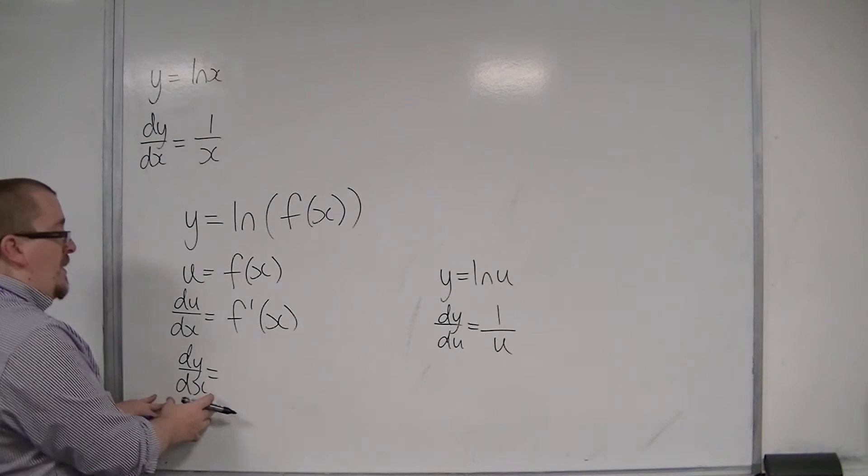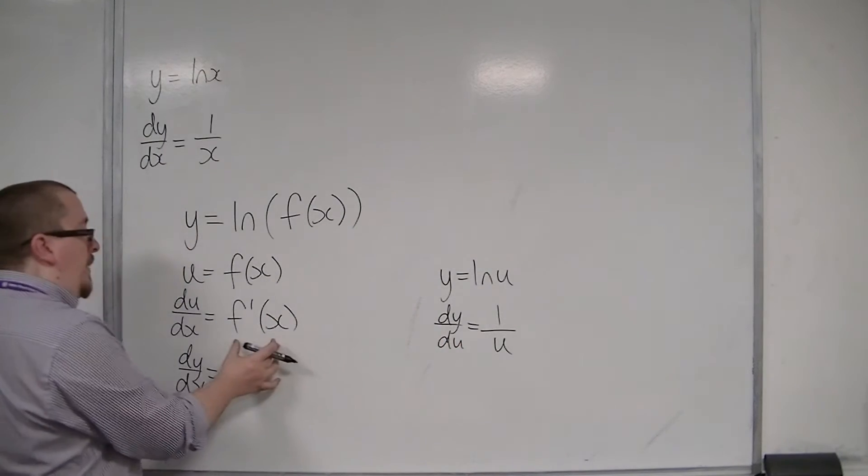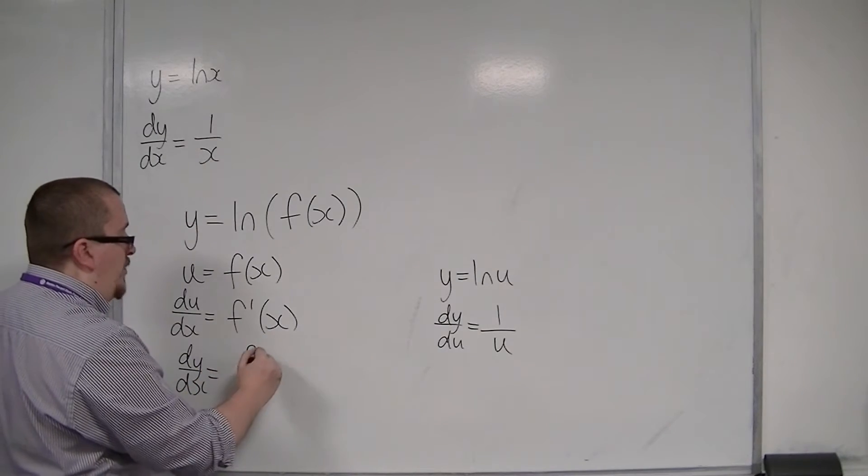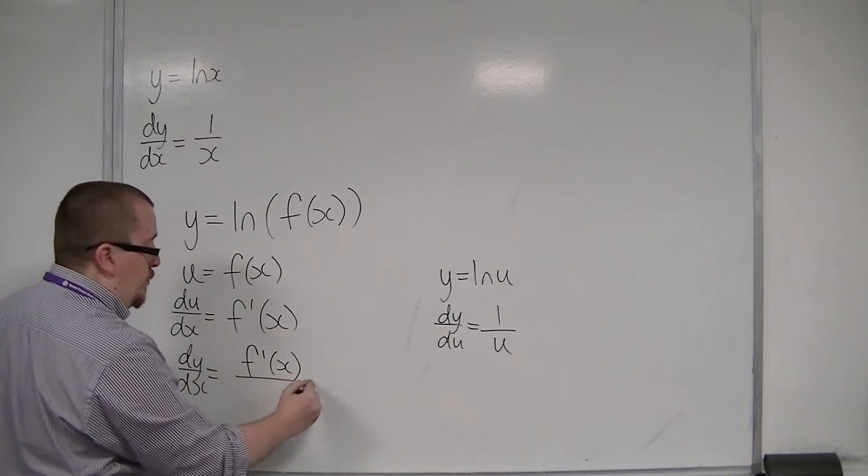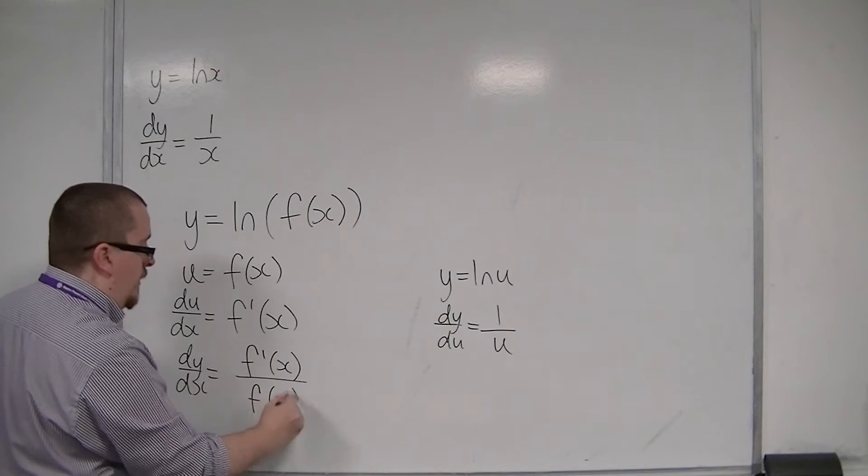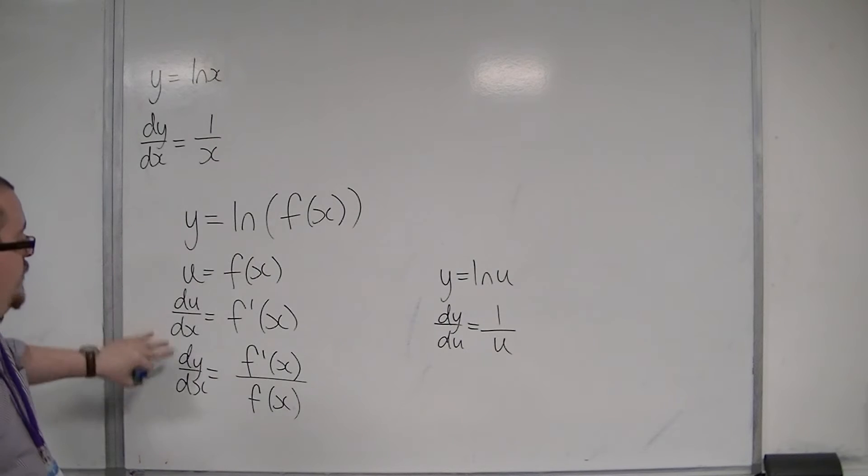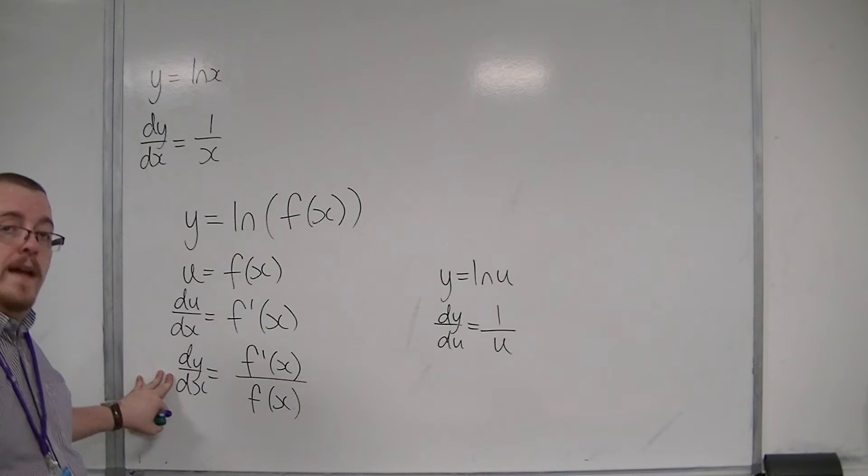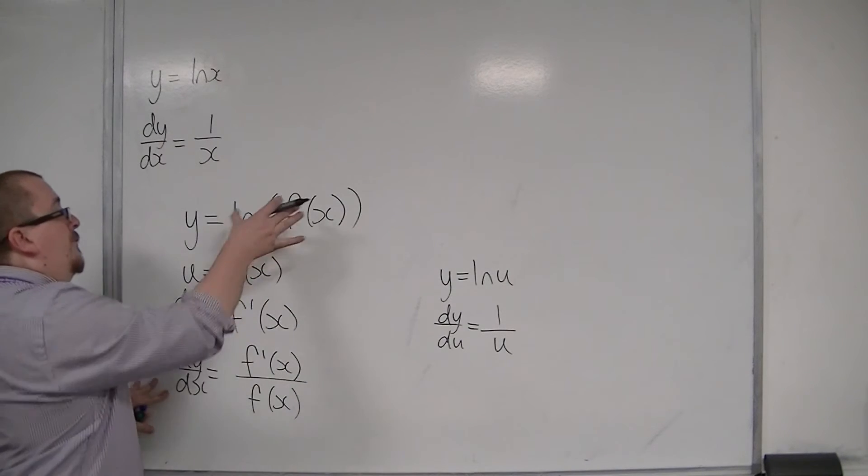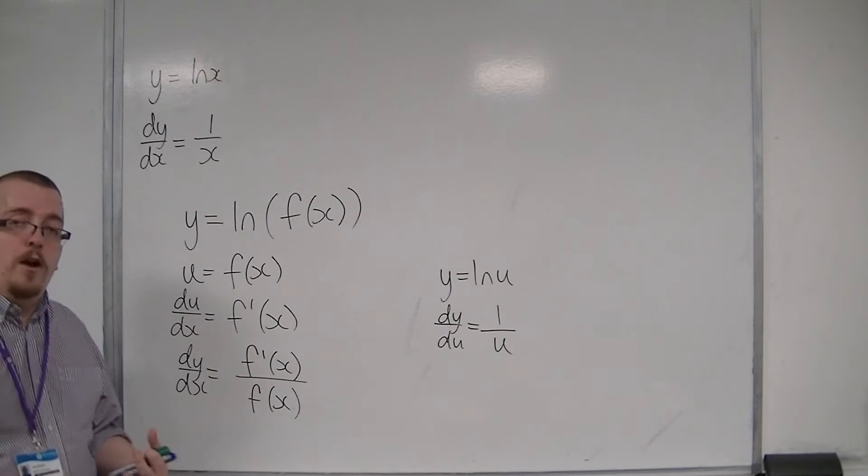So dy by dx is dy by du times du by dx, which is f prime x over u, and u was f of x. So if you're differentiating log of f of x, the derivative is f prime over f. So this is a very useful thing to know.